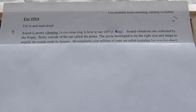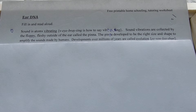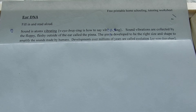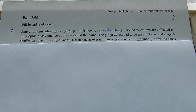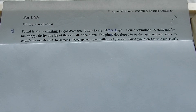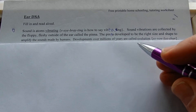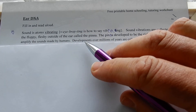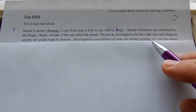Some people had bigger ears by mutations and some people had smaller ears by mutations, and those people couldn't hear when other humans were shouting 'watch out, behind you, there's a tiger!' The people that had the right size pinna for the frequencies of sounds made by humans survived, and that's how evolution goes. Developments over millions of years are called evolution.